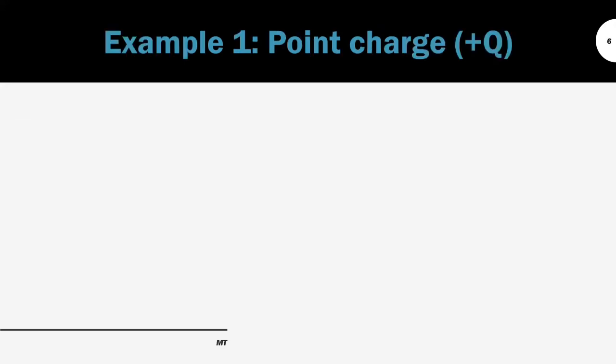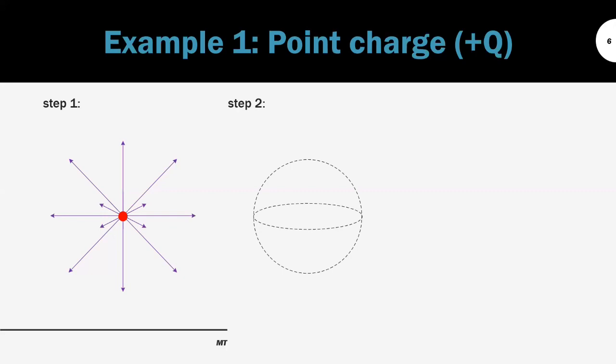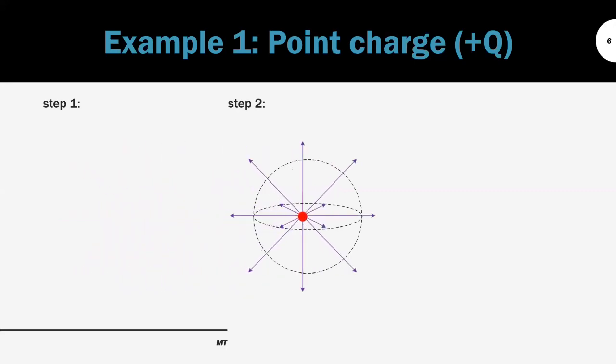Let's look at the first example: the point charge. The point charge has a field pattern as shown in the picture here. We can see the electric field is flowing in all directions. For the second step, we choose the sphere as our Gaussian surface. We can see the electric field lines are perpendicular to all the surface of the sphere.